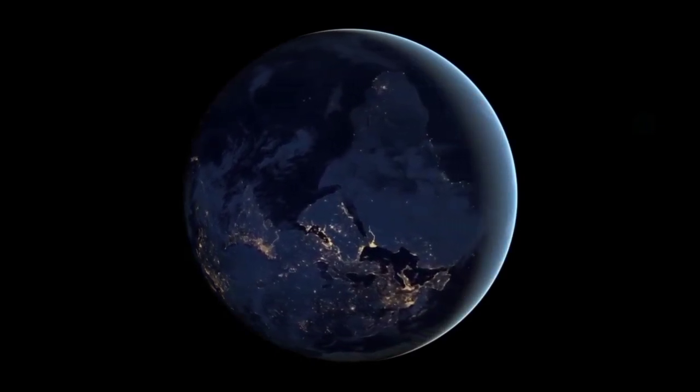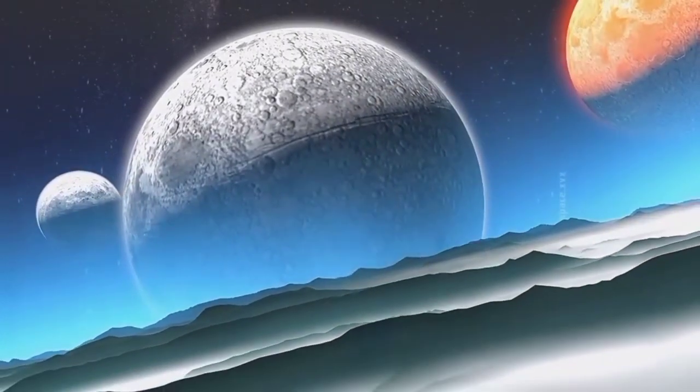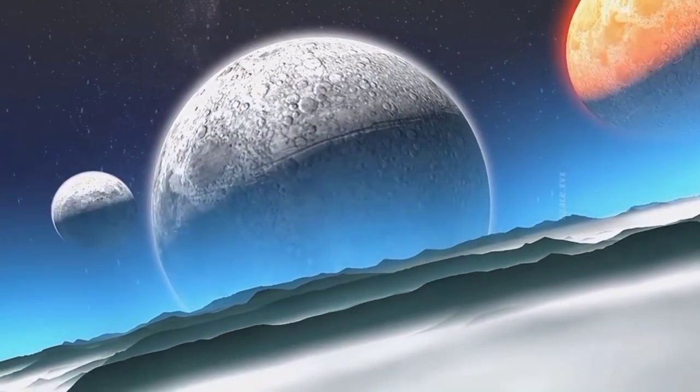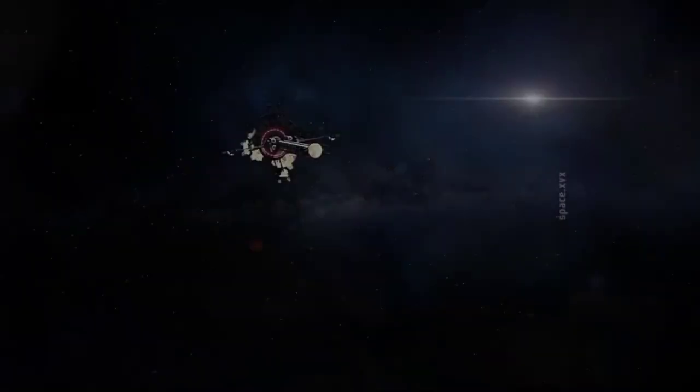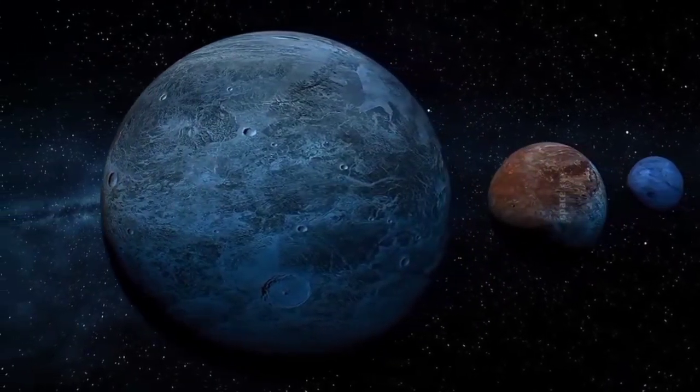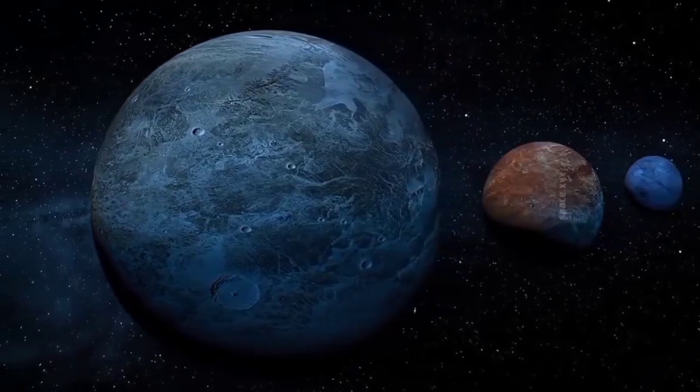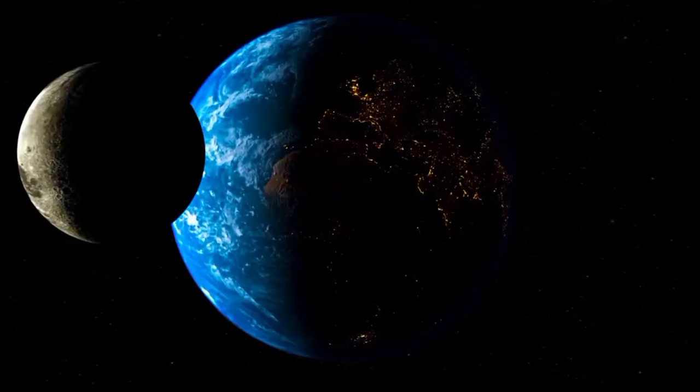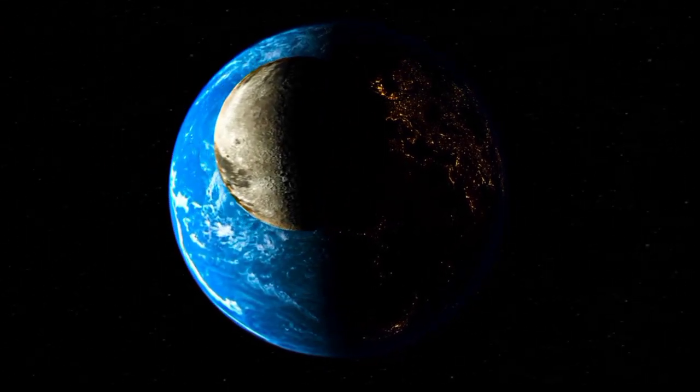Pluto's journey around the Sun is unlike any other planet in our solar system. It takes a staggering 248 years to complete a single orbit. This means that since its discovery in 1930, it hasn't even completed one full revolution. However, the intrigue doesn't stop there.